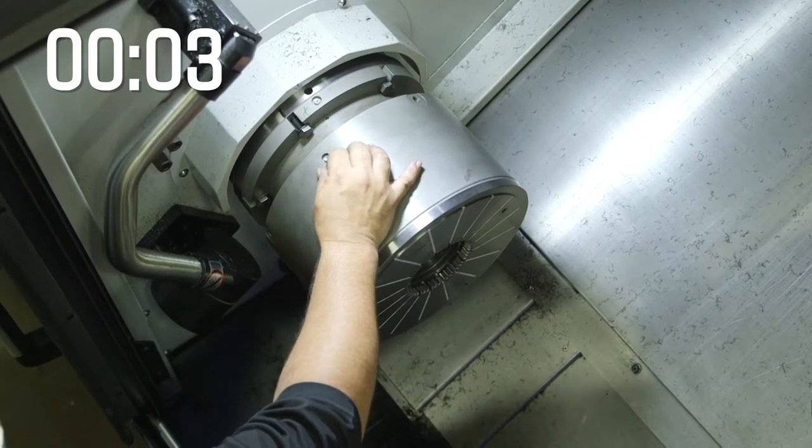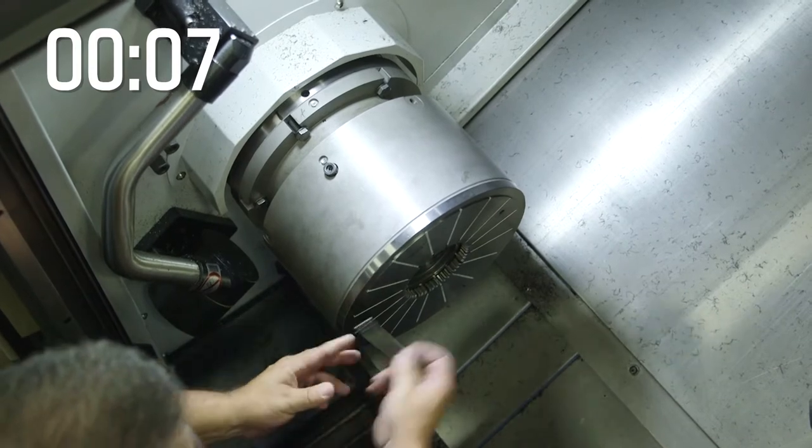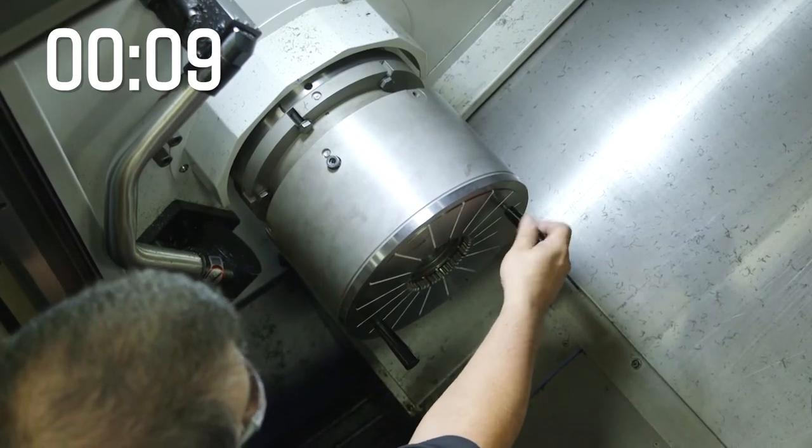First, we remove the retention knob on the collet to allow it to freely move. Then we put in the collet change handle.